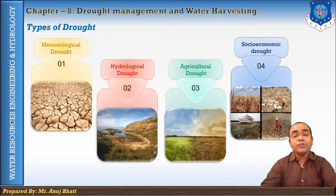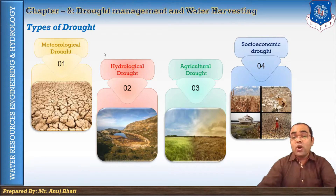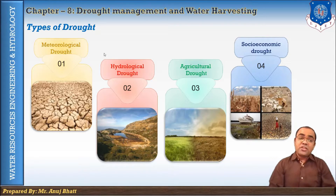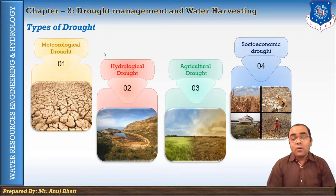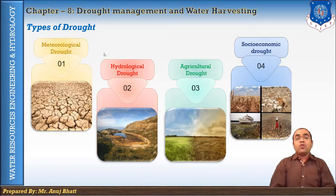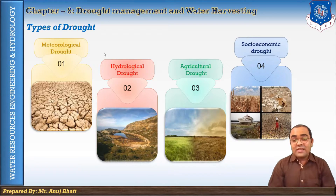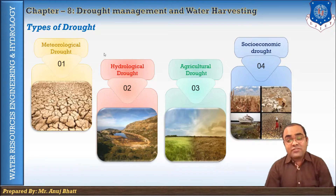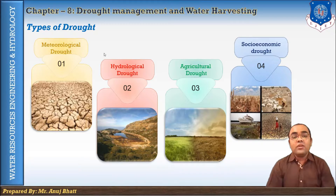The last type is socio-economic drought. Socio-economic drought associates the supply and demand of some economic good or resource with elements of meteorological, hydrological, and agricultural drought. Deficiencies in precipitation are linked directly to the supply of some commodity or economic good. Increases in population can substantially alter demand for these goods over time, and the incidence of socio-economic drought can increase due to changes in meteorological drought frequency, societal vulnerability to water shortage, or both.